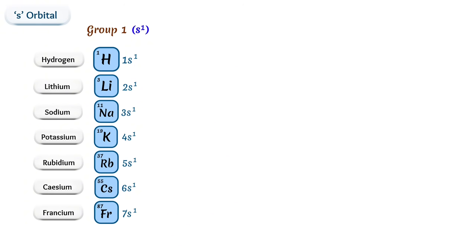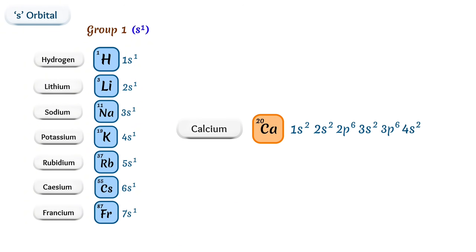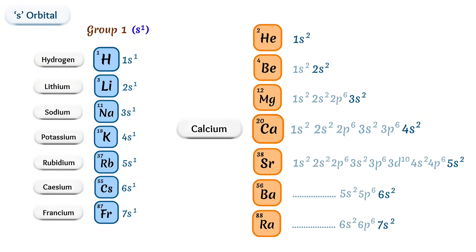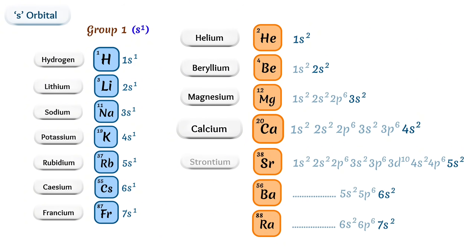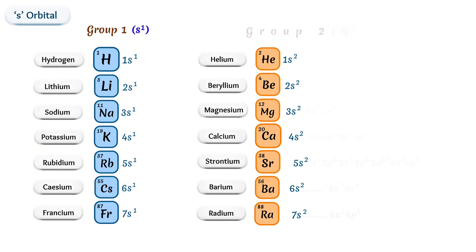Now let's look at the electron configuration of calcium, which has two valence electrons in the s orbital. So we arrange the same type of elements in another column in order of increasing atomic number. In this column we have helium, beryllium, magnesium, calcium, strontium, barium, and radium. We name this column Group 2.